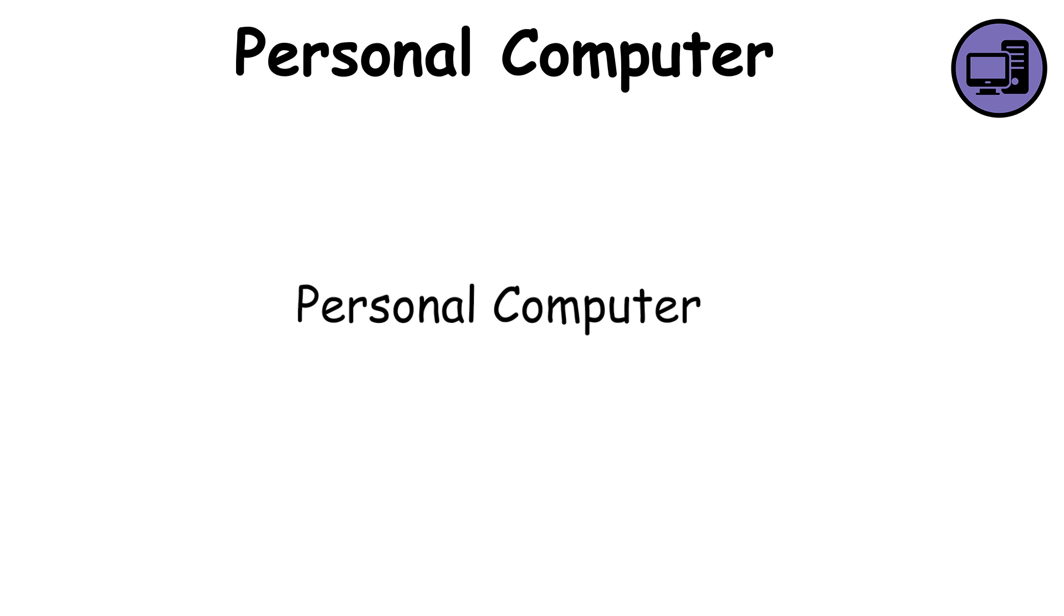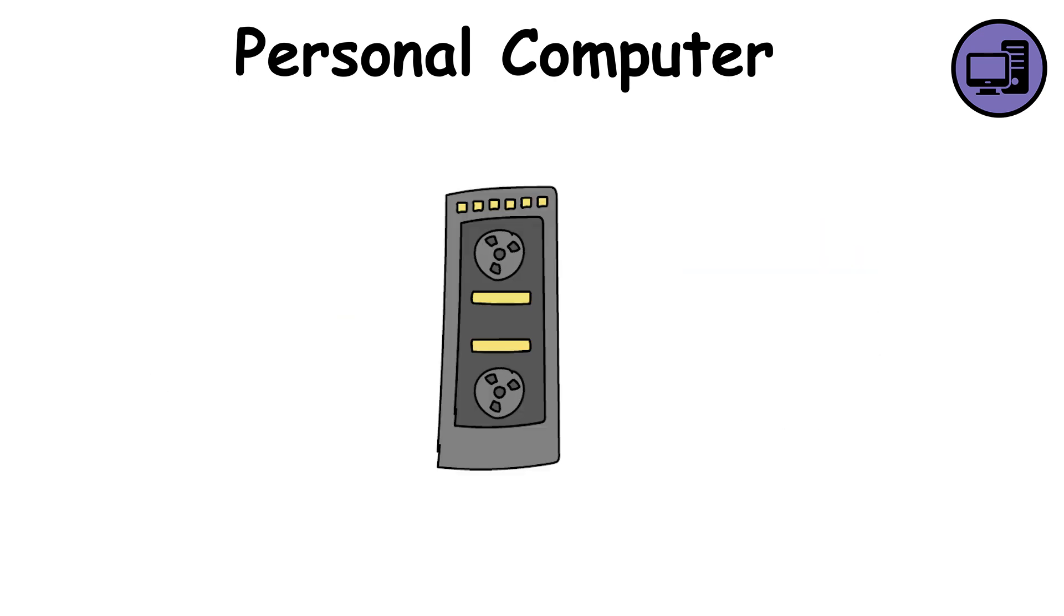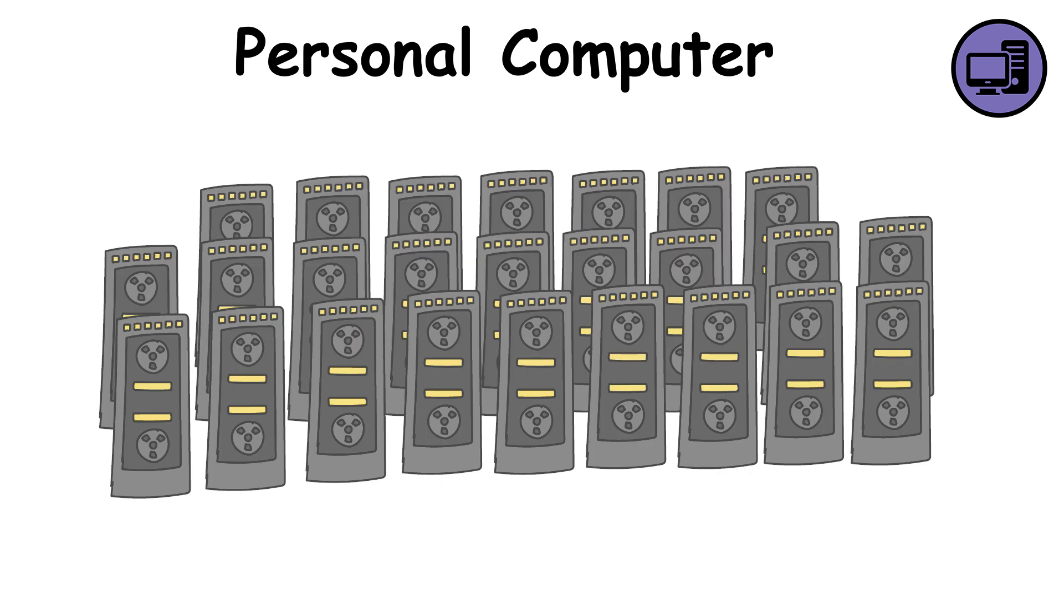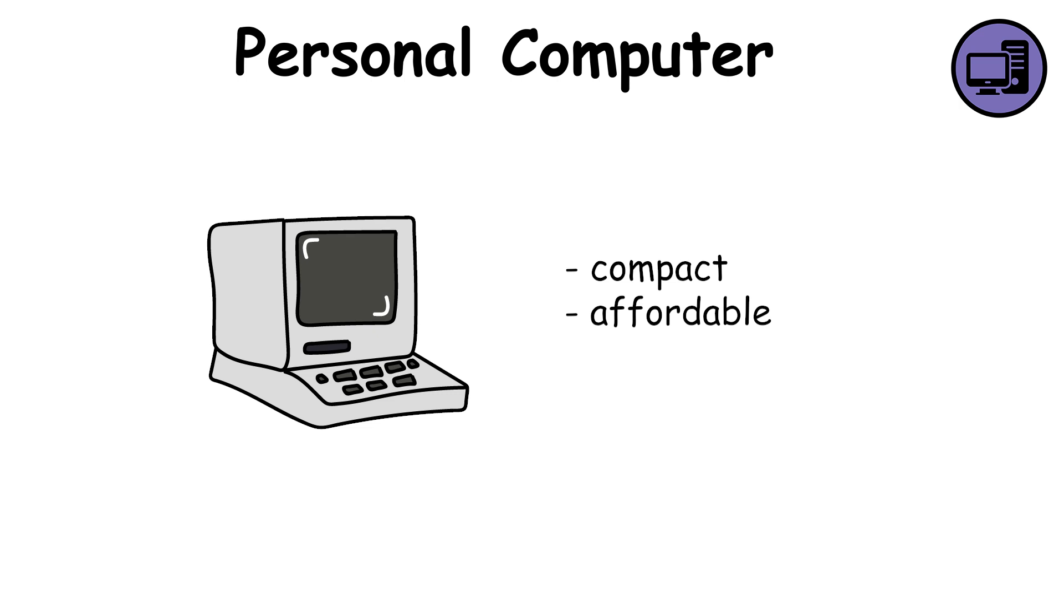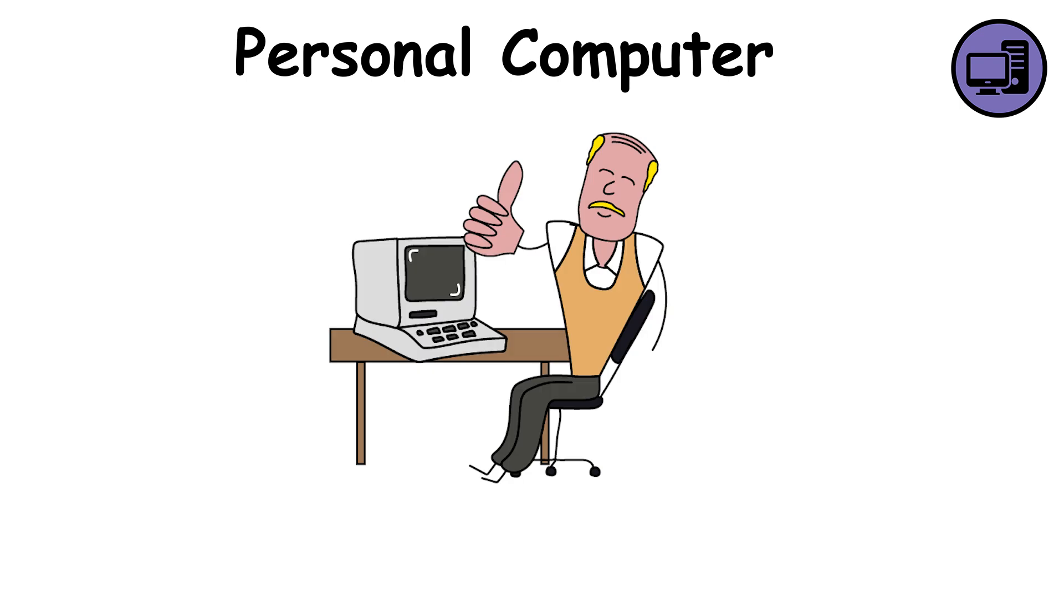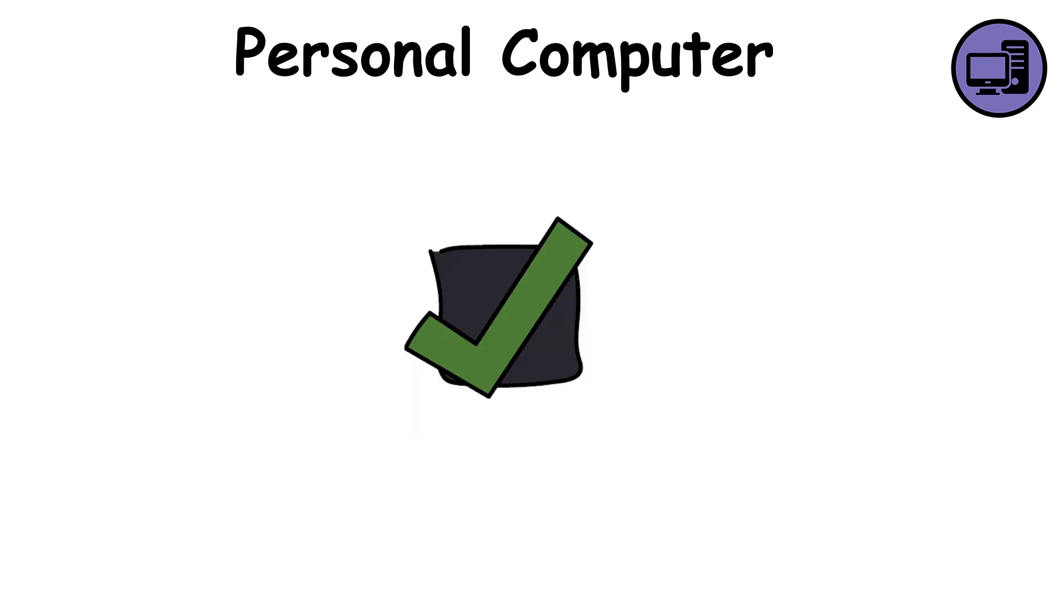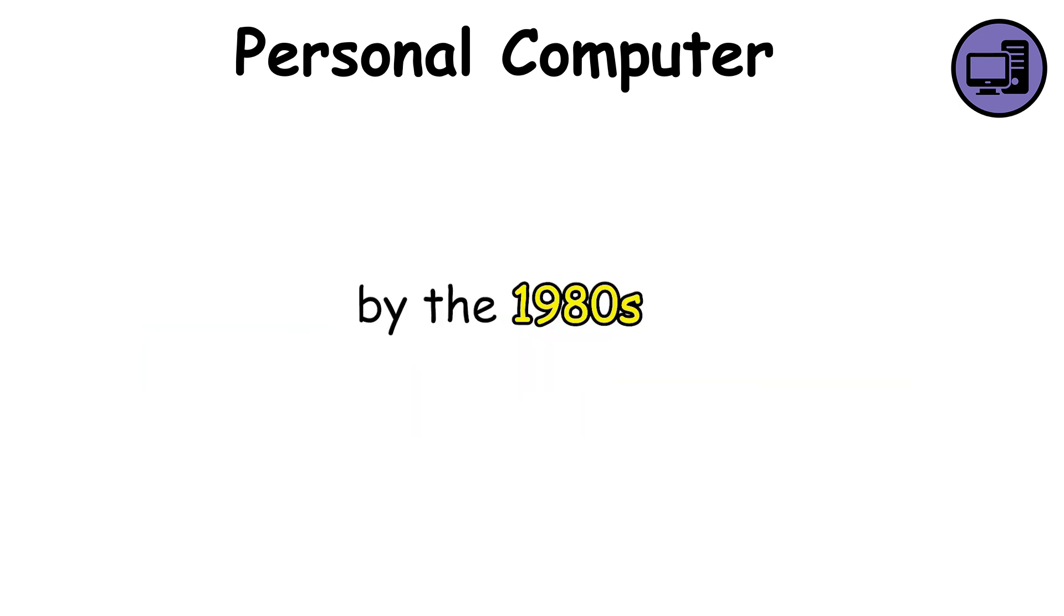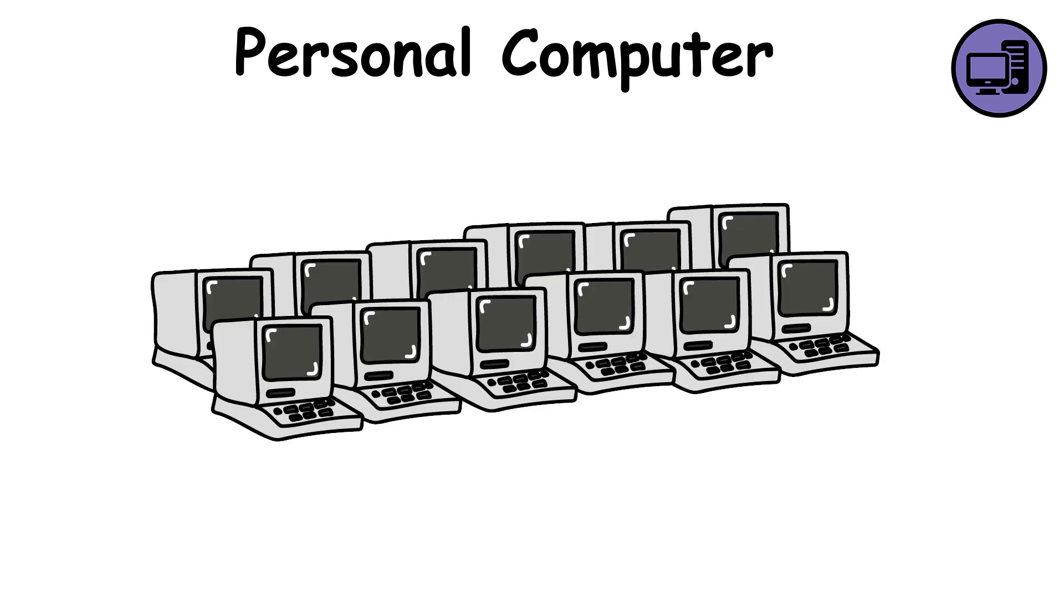Personal Computer. The personal computer, or PC, brought computing power into people's homes. Unlike early computers from World War II that filled entire rooms and required teams of operators, PCs were compact, affordable, and simple enough for anyone to use. In the 1970s, early models like the Altair 8800 and Apple II proved that computers could be small and affordable. By the 1980s, companies like IBM and Microsoft standardized the market, making PCs a household essential.